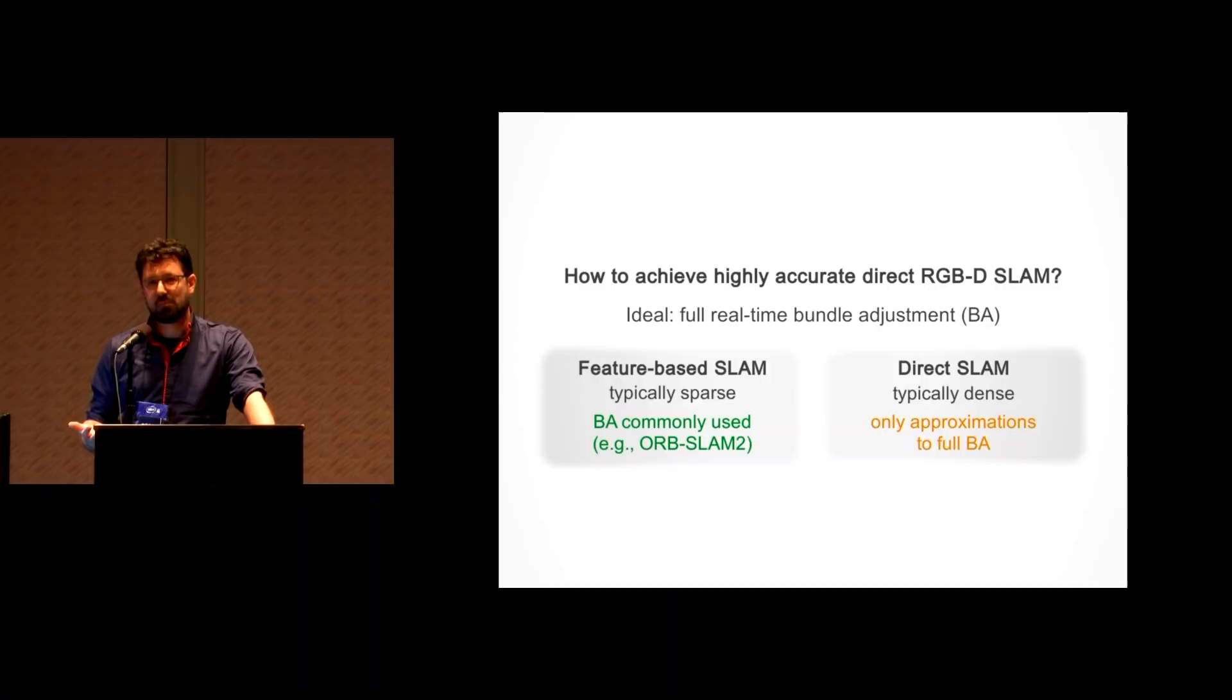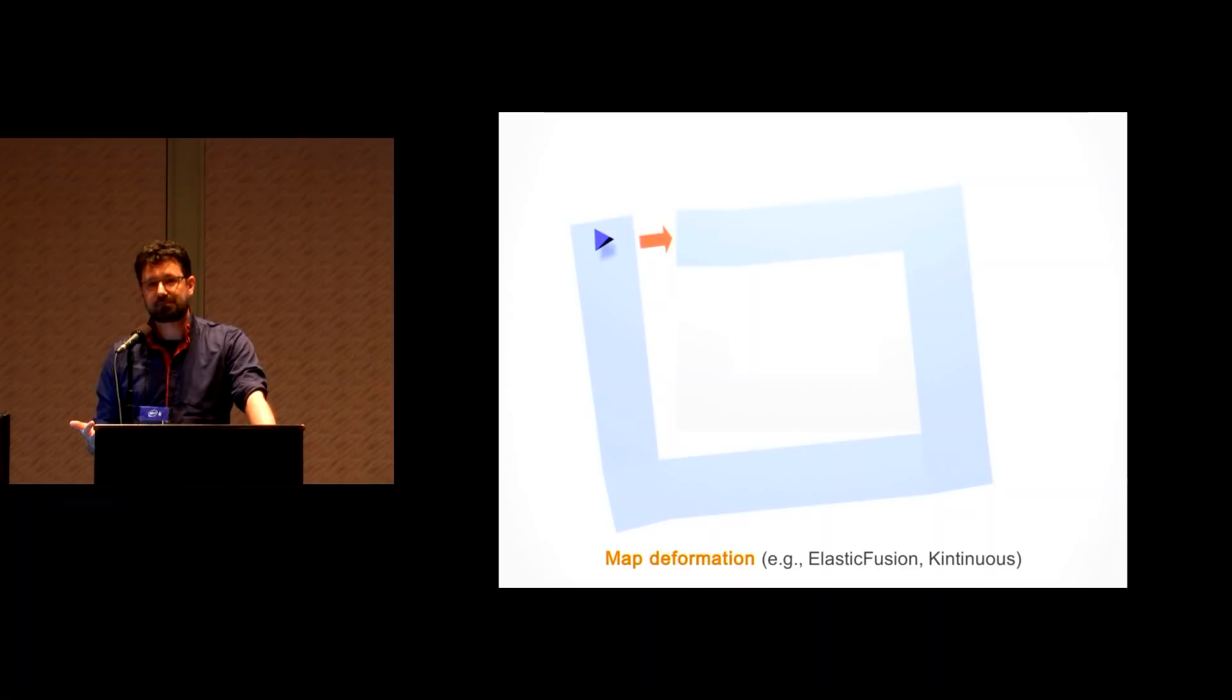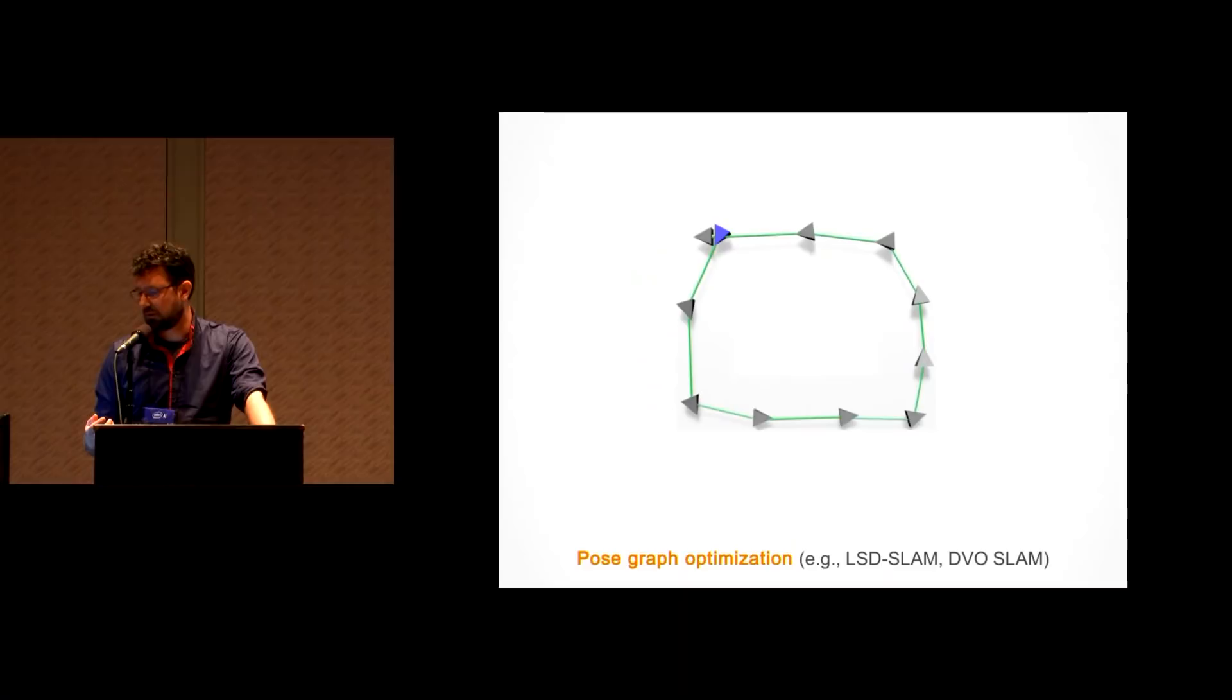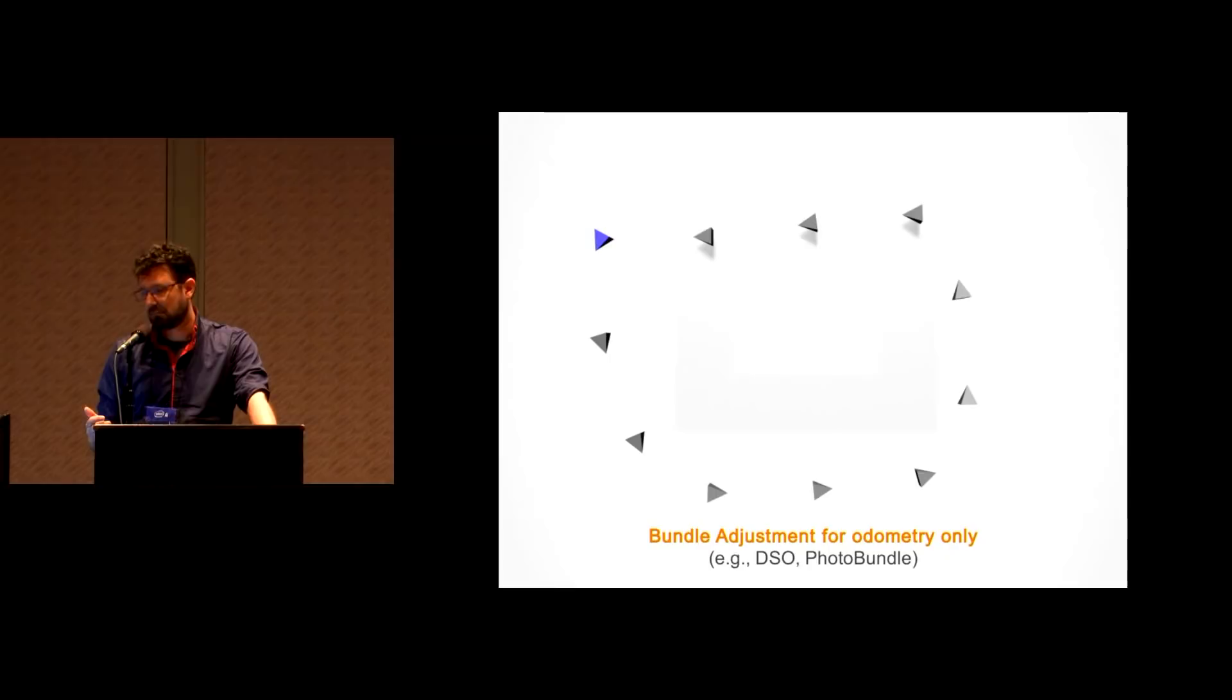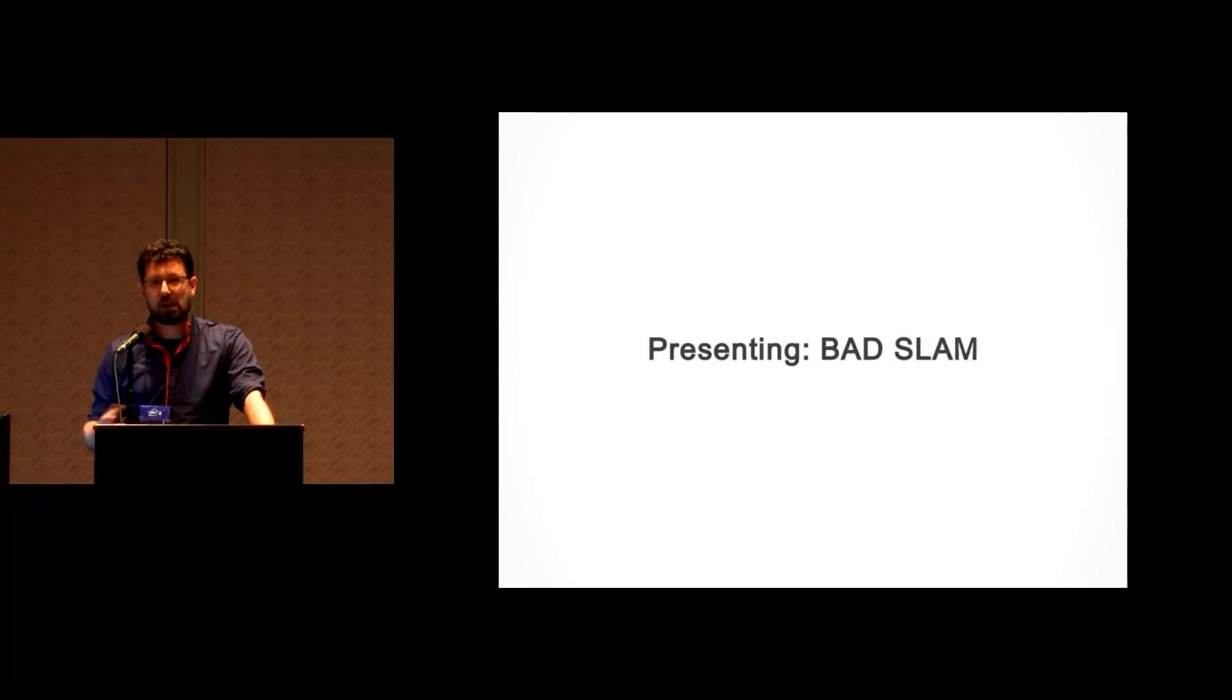Bundle adjustment is commonly used for feature-based Slam where you have sparse measurements, but not really for direct Slam where you typically have much denser measurements. Rather, it's common to approximate bundle adjustment, for example, using non-rigid map deformations, pose graph optimization where you enforce relative pose constraints, or fragment-based optimization where you subdivide the scene into fragments and then optimize the alignment of the fragments.